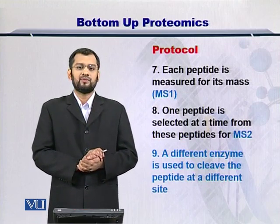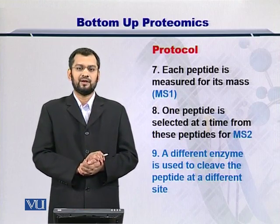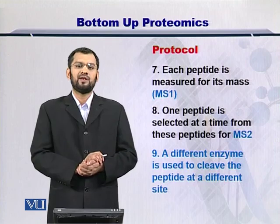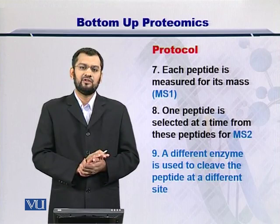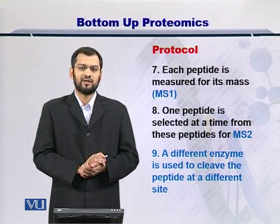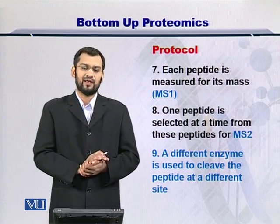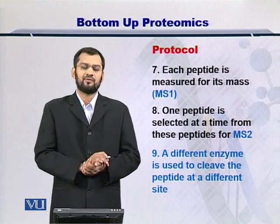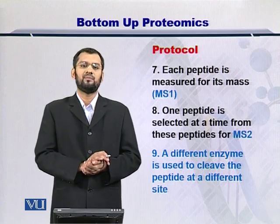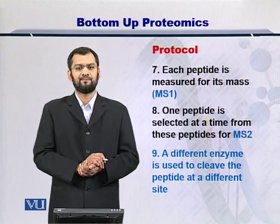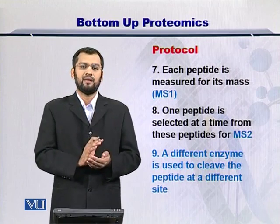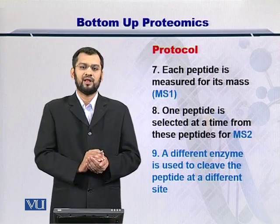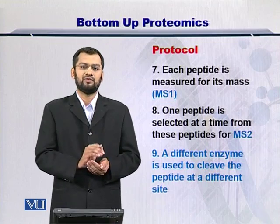Once you have obtained the peptides from the enzymatic digestion, you send them into the mass spectrometer. Once you inject these peptides into the mass spectrometer, they are deflected within the magnetic field and you can obtain their molecular weight or mass. This is the first MS, or simply MS1. MS1 would give you the molecular weight of these peptides.